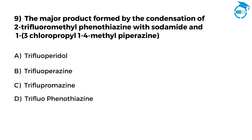Here is the next one. The major product formed by the condensation of 2-trifluoromethyl phenothiazine with sodamide and 1-(3-chloropropyl)-4-methylpiperazine. Option A, Trifluoridyl. Option B, Trifluoperazine. Option C, Triflupromazine. Option D, Trifluophenothiazine. Your time starts now — only 7 seconds left, post your answer in the comments.